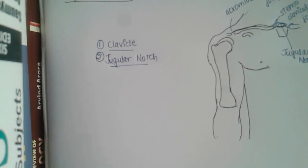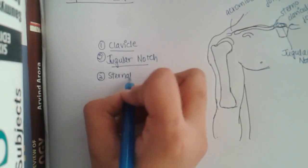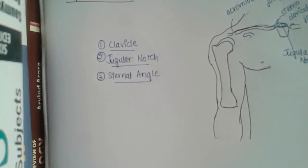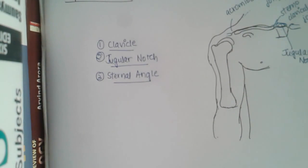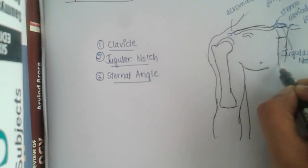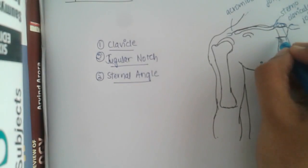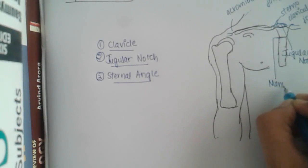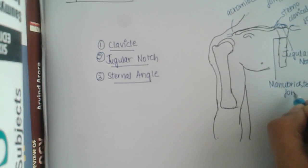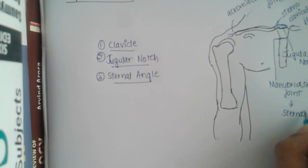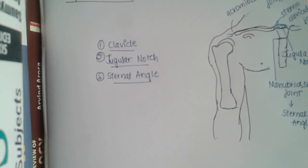The third landmark is the sternal angle. It is about five centimeters below the jugular notch, and is the place where the manubrium joins with the body of the sternum — this is called the manubriosternal joint, which is also known as the sternal angle.